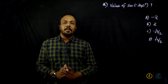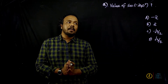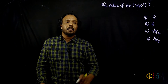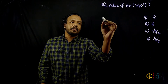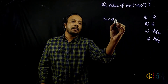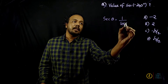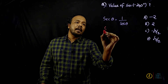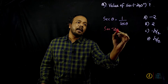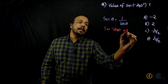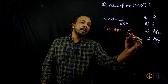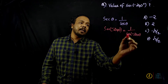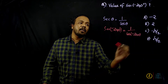Here, we need to find the value of sec(−240°), which is 1 by cos(−240°). We have to compare the value of cos(−240°) in the same way. We need to convert this to a standard positive angle.